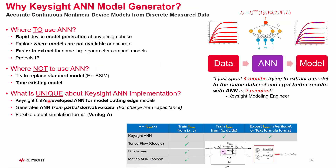Why Keysight? ANN is not for all situations, but very powerful when it can be used. Where we recommend using the ANN is when you need to generate a model quickly. At any design phase, it can generate a very accurate model that fits the measured data — a nonlinear model fit to measured data.